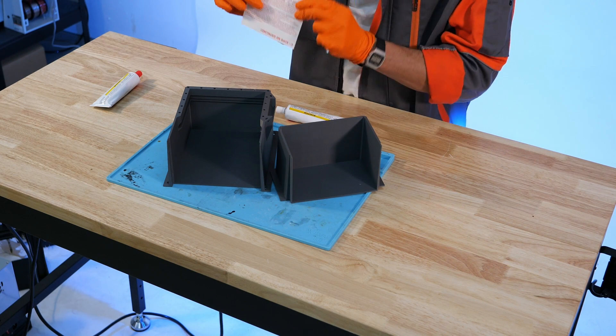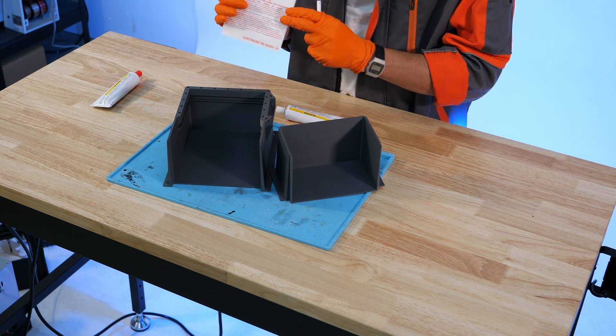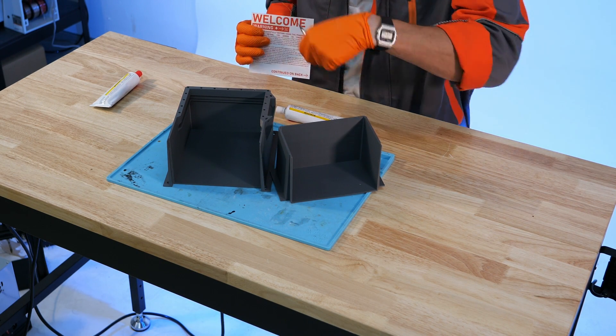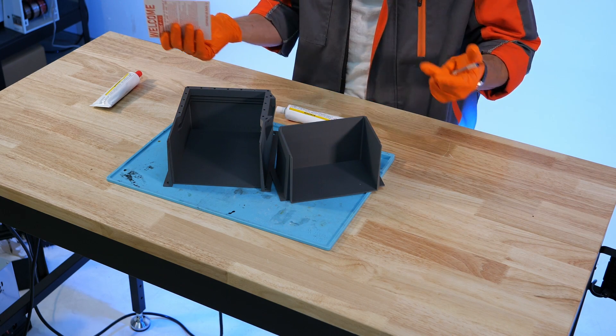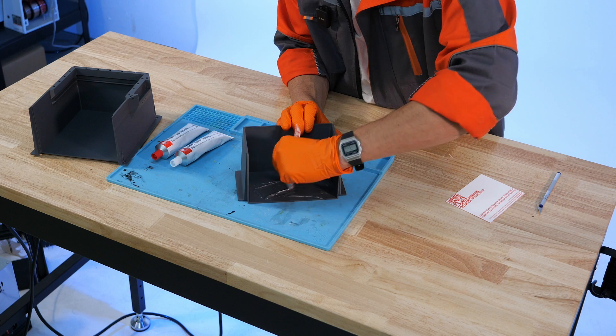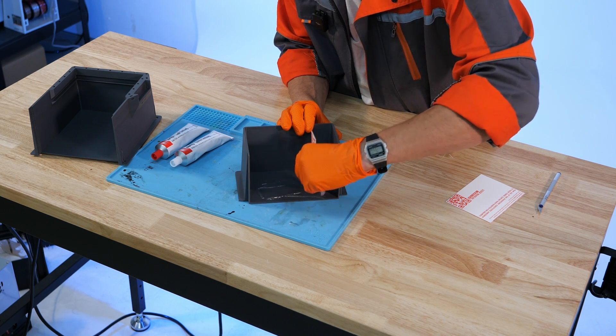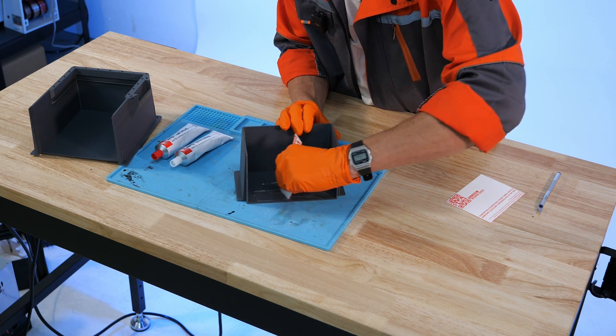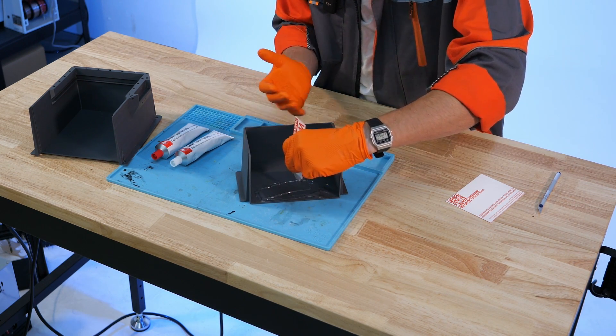So I just realized that the warning insert that comes with the power core might be a really good tool for applying this epoxy and mixing it. So I'm going to cut this up and use it as a little mixing stick. This is a quick set 15 minute epoxy so we need to be kind of fast about how we apply it and it can also help to do that work in stages.